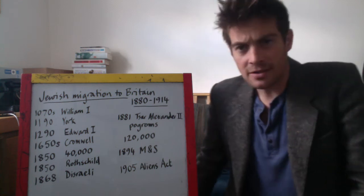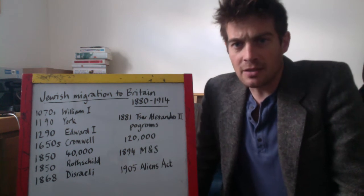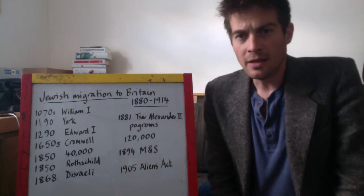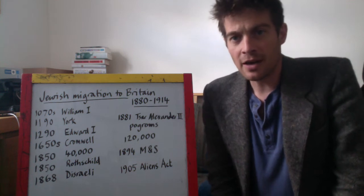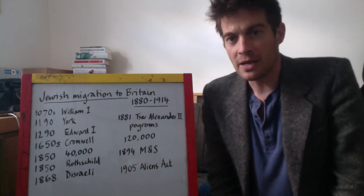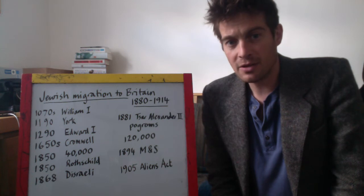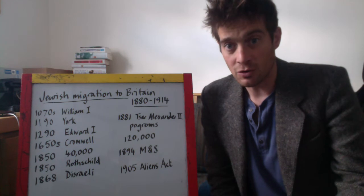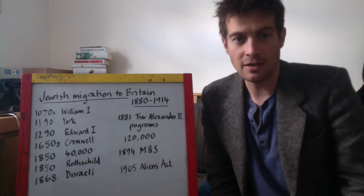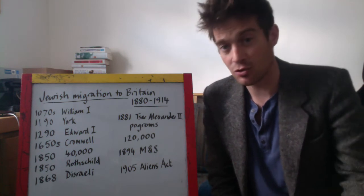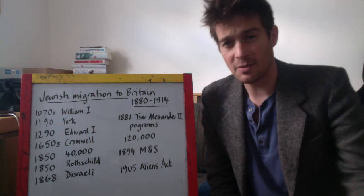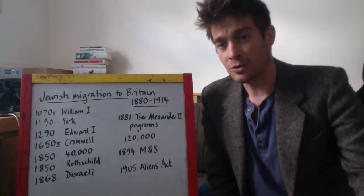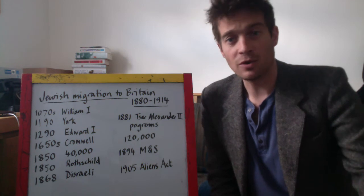There was a horrendous incident in the city of York in 1190, when the Jewish people of that town were driven into the Mott and Bailey Castle — Clifford's Tower in the middle of York — which was then set on fire. The entire Jewish population of York was massacred that night. Some historians say this happened because many people around the town owed Jewish moneylenders money and didn't want to pay it back.